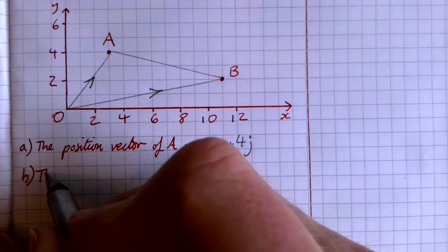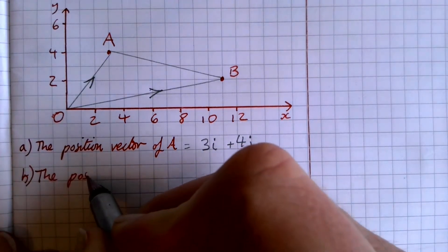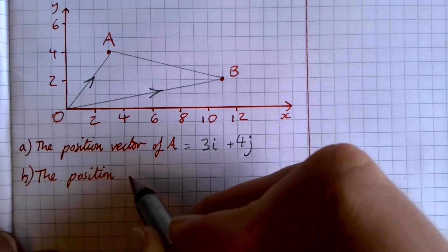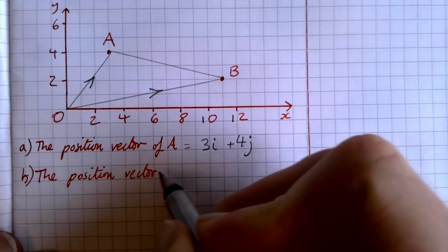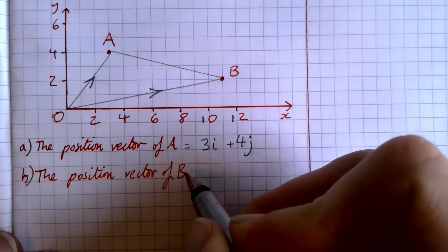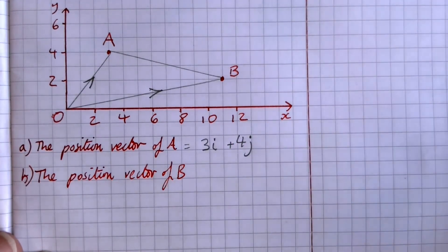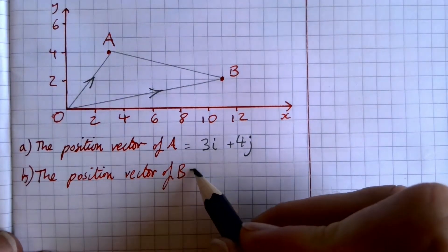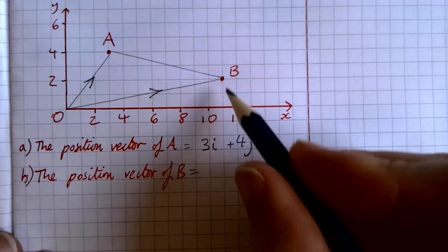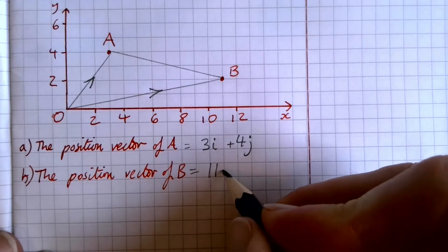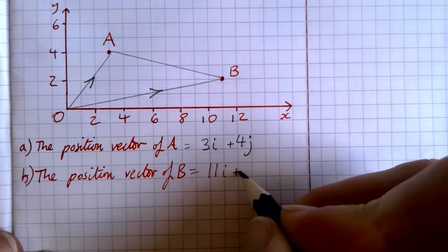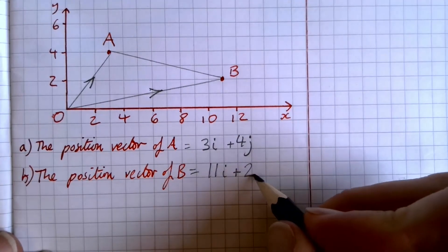The second question we're going to have is, what is the position vector of B? And we're going to be looking at exactly the same idea. So, we're going all the way along to 11, so it's 11i, and we're going up to 2, so it's 2j.